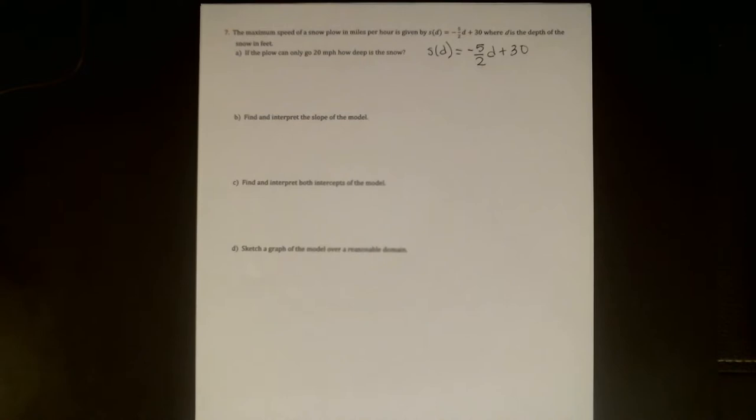Okay, so maybe I'll rewrite some of this a little bit bigger. In this problem, we're given an equation, and it is a linear equation. So here's my function, otherwise known as your model. If you are modeling a real world situation, in this case we're modeling the relationship between the depth t of snow in feet and the maximum speed of a snowplow s in miles per hour. The equation or graph or table, whatever that models that relationship can be called your model.